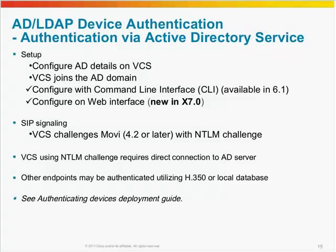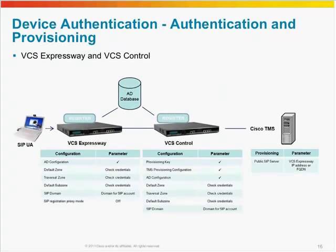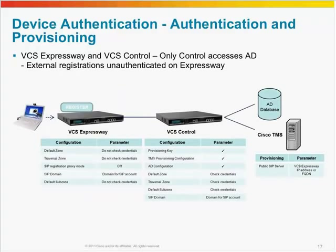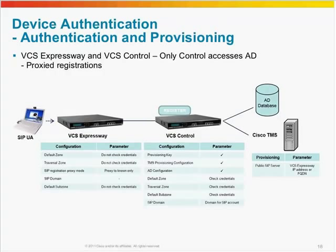If you want to deploy a secure video network, you will need to join both control and expressway to the domain to utilize AD authentication for both external and internal devices. You can also only join the control and keep the expressway unauthenticated, which will leave external devices unauthenticated on the expressway. If you enable proxy registrations and disable the SIP domain, any external SIP device will then be authenticated on the control, so you won't have to join the expressway to the domain and Active Directory.